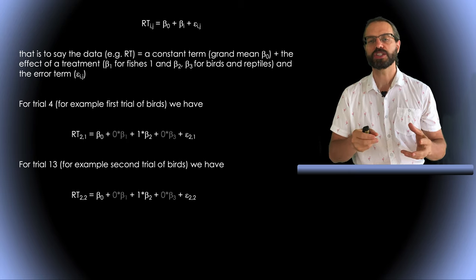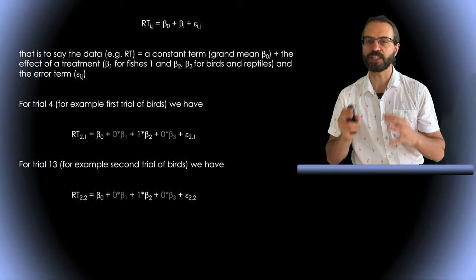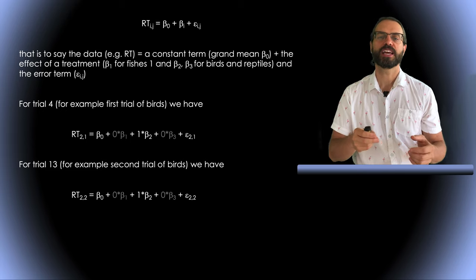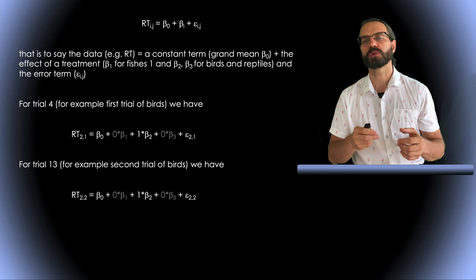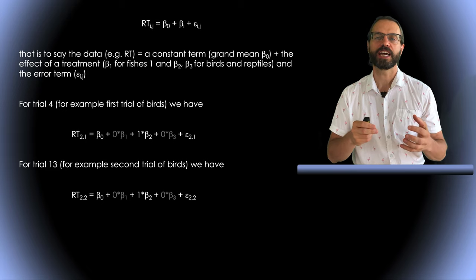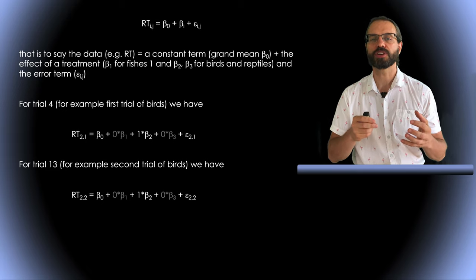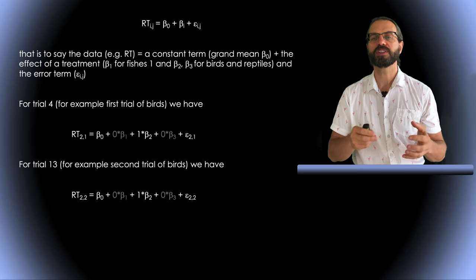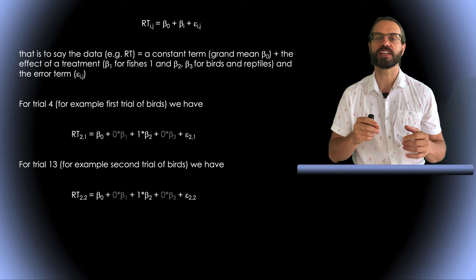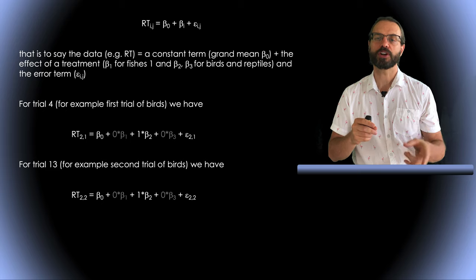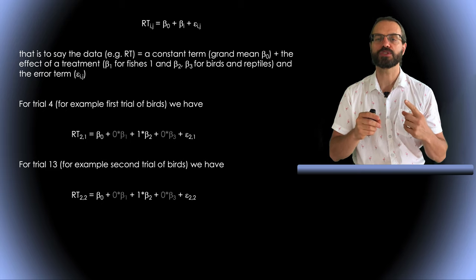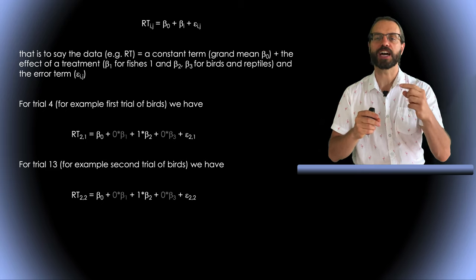We would have a similar relationship for reaction times on images of fishes where we use beta one and for reptiles we would use beta three. The ANOVA variables are categorical variables that can only be zero and one in this case, while the contrast variable in the previous slide was a continuous variable that could take any value.